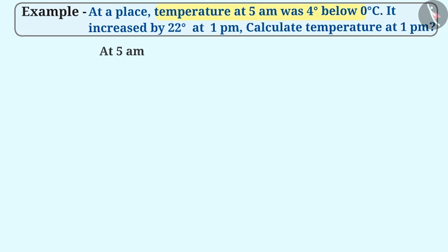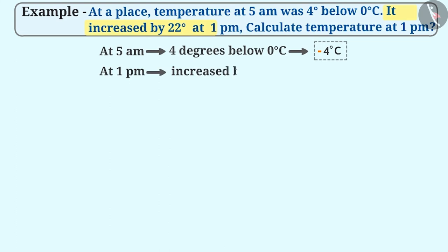In the given example, the temperature at 5 am was 4 degrees below 0 degrees. Since the temperature is 4 degrees below 0 degrees, it is represented as a negative integer, that is, minus 4 degrees centigrade. Temperature increased by 22 degrees centigrade at 1 pm. Since the increase in temperature is represented as a positive integer, it can be shown as plus 22 degrees centigrade.